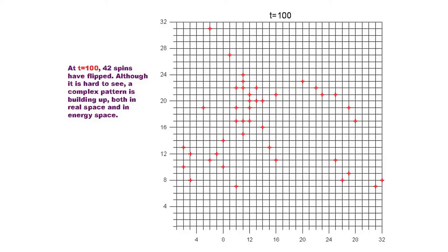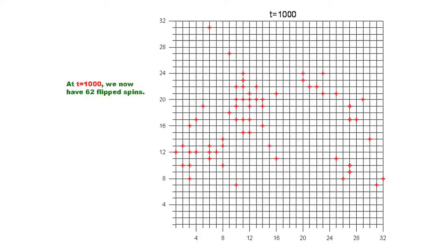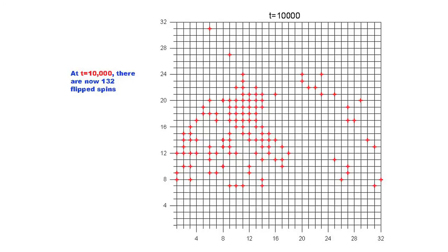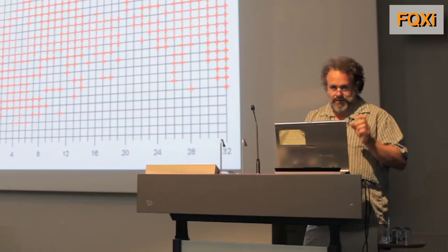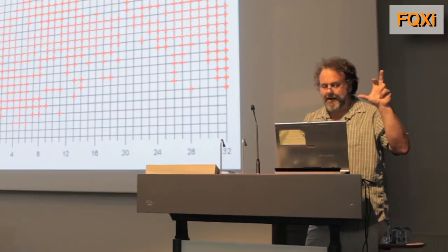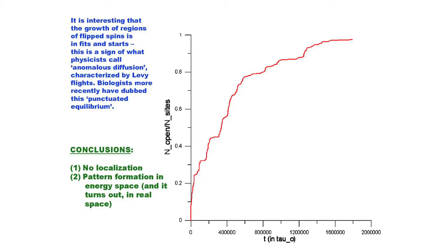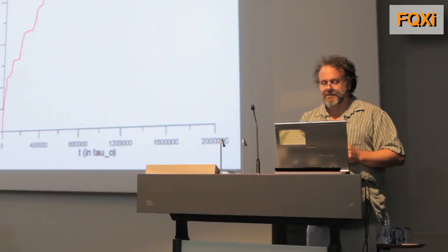After a hundred, forty-two spins have flipped. After a thousand, sixty-two have flipped. If you look in energy space, you see structures starting to appear in the distribution over energy of these things, which is entirely quantum mechanical. In real space, we don't see much yet. After ten thousand, we begin to see something happening. After a hundred thousand, definite spatial structure is appearing. It's actually essential to have these long-range interactions — otherwise it would just be diffusion-limited aggregate growth, but this is not what it is. This is a way in which structure can grow in the purely quantum dynamics in the presence of long-range decohering interactions. And the growth is not logarithmic — it proceeds in jumps, which in classical physics are called Levy flights. Biologists call them punctuated equilibrium.